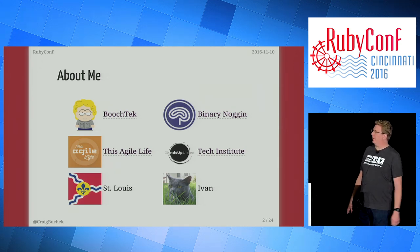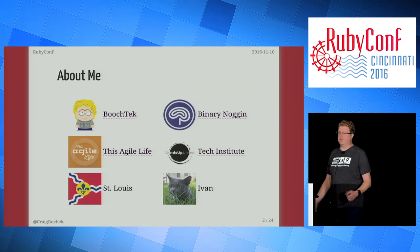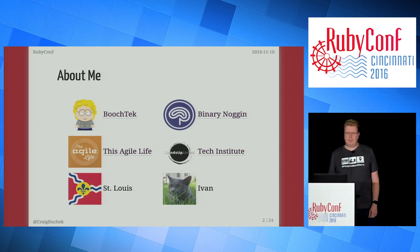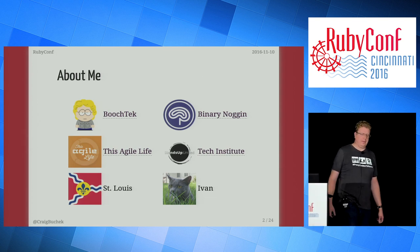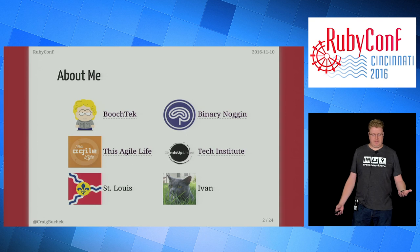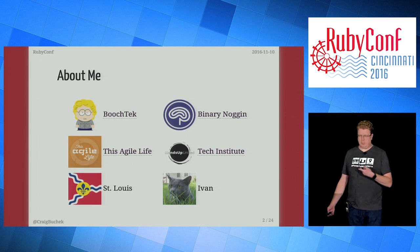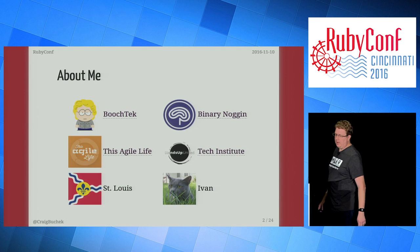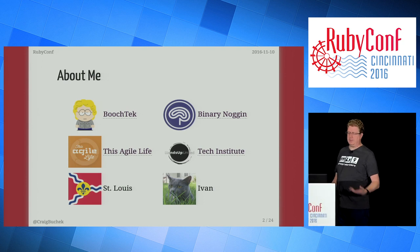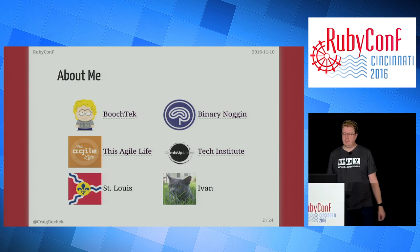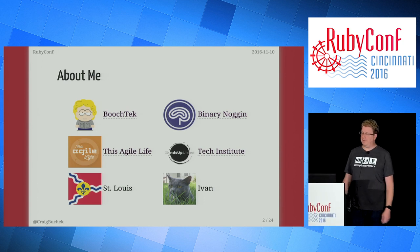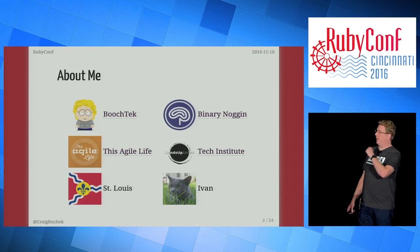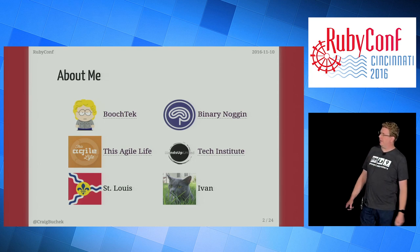I do a lot of work with a company called Binary Noggin. We're going to have a few developers free in January. I do a podcast called This Agile Life — we talk about Agile web development, about people at work, not resources. I do some mentoring for Tech Institute for some underprivileged kids. I'm from St. Louis, and apparently you have to have a picture of your cat, so that's my cat, Ivan.